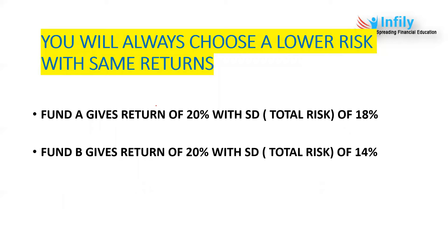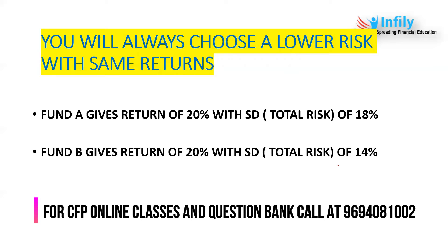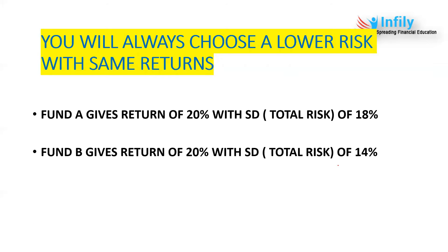You will also always choose a lower-risk fund with the same returns. Fund A gives a return of 20% with a standard deviation of 18%, and Fund B gives a return of 20% with a standard deviation of 14%. Both give the same returns, but Fund B carries lower risk. Higher standard deviation means higher risk, so you would choose Fund B. This is what risk-adjusted performance means.